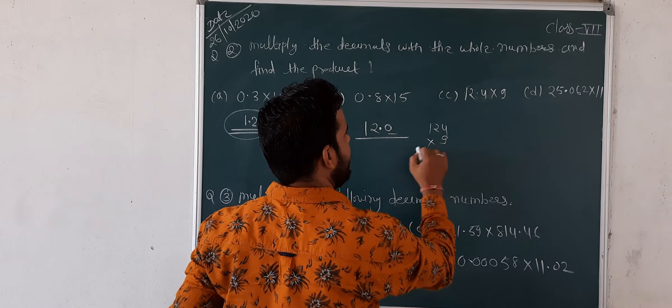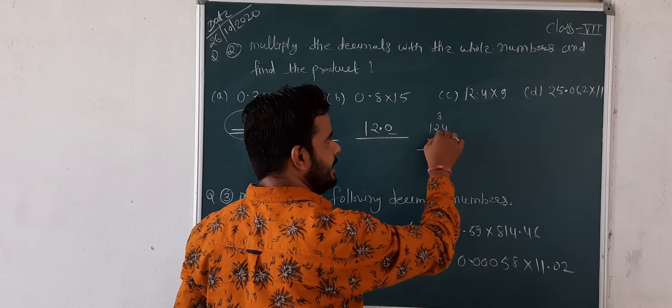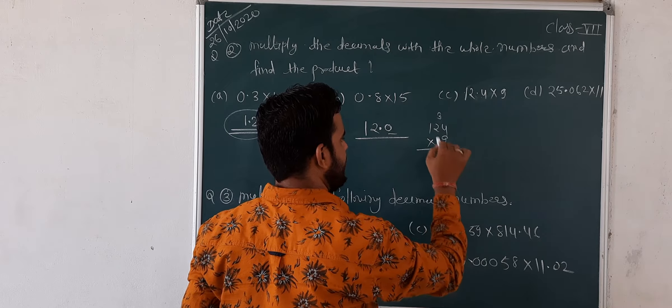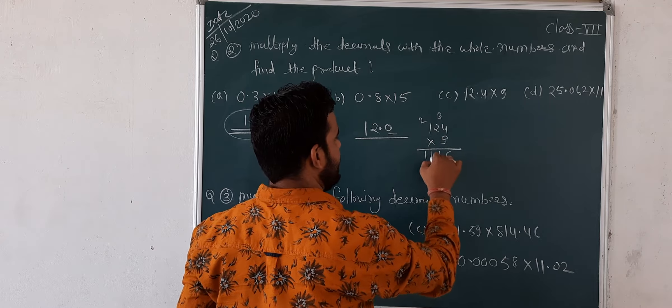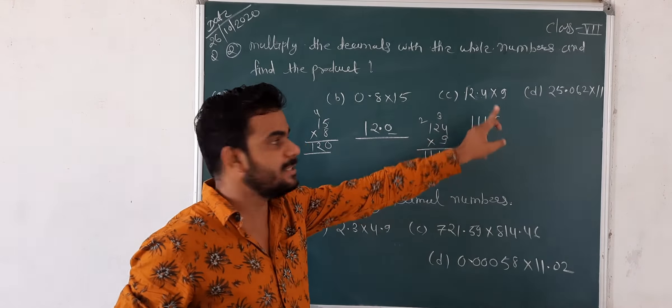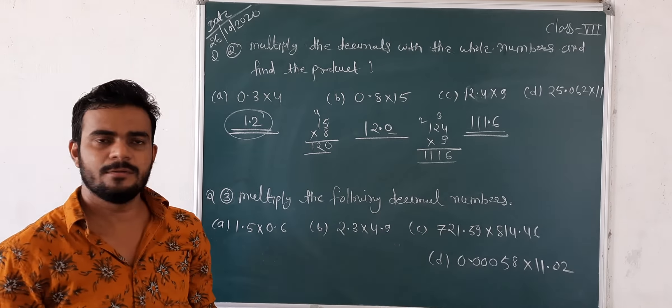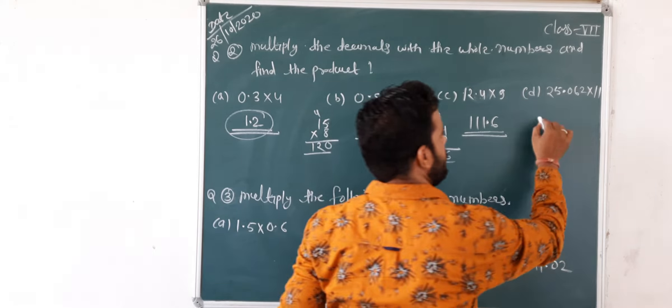Next here, 15 x 8.0. 15 x 8, 8 x 5 is 40, carry 4. 8 x 1 is 8, plus 4 equals 12. Answer is 120. But after the decimal, there is one number. So just remove one place and put the point: 120.0.